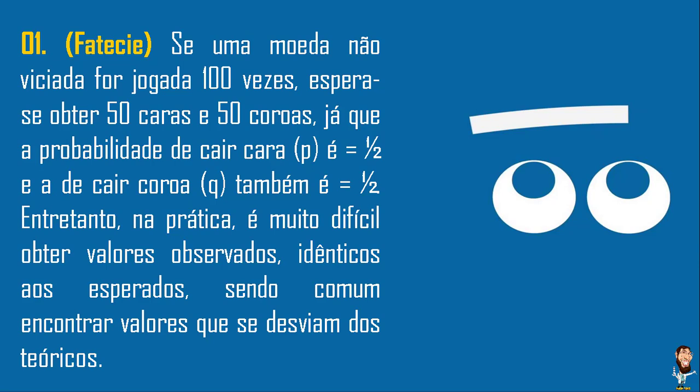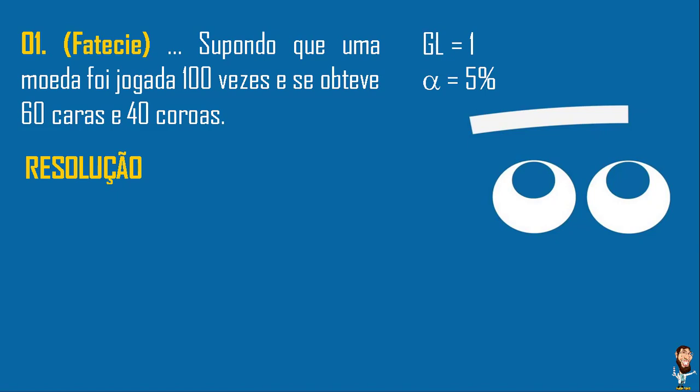Entretanto, na prática é muito difícil obter valores exatos, idênticos ao esperado, sendo comum encontrar valores que desviam dos teóricos. Vamos então ao cálculo. Grau de liberdade: número de classes ou opções menos uma unidade. Quantas opções eu tenho? Cara ou coroa — duas opções. Menos uma unidade: grau de liberdade igual a 1. Supondo que a moeda foi jogada 100 vezes, mas na verdade obteve 60 caras e 40 coroas — não foi 50-50.